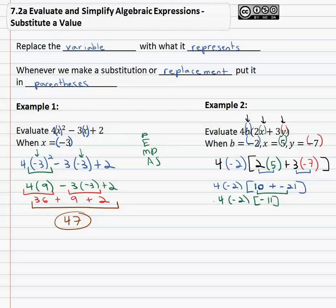And now finally, we can multiply from left to right. 4 times negative 2 is negative 8, times negative 11 is positive 88 for our final solution.